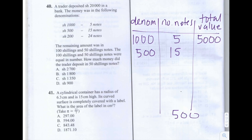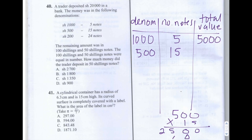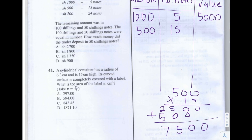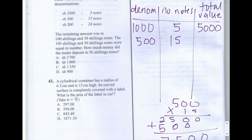So 500 multiplied by 15: 5 times 0 is 0, 5 times 0 is 0, 5 times 5 is 25; then 1 times 0 is 0, 1 times 0 is 0, 1 times 5 is 5. Adding these together gives us 7,500 for the value of 500 shilling notes that the trader deposited.